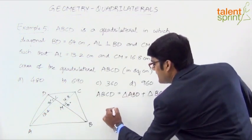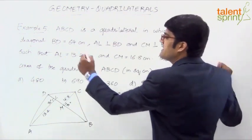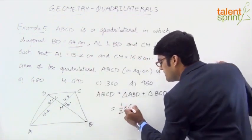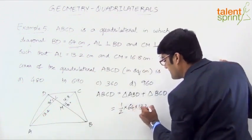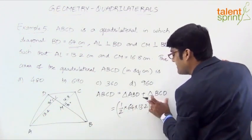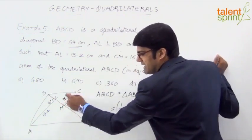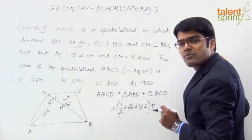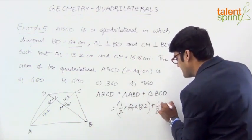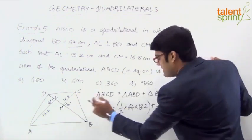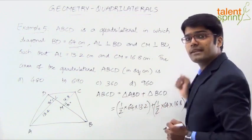So for triangle ABD we can say the area is half into the base is BD. What is the length of BD? 64. It is given here. So 64 into the height is this perpendicular which is 13.2. Similarly area of the triangle BCD. This is the base BD again. Height is 16.8. Perpendicular from the top vertex there. So half into base into height. So this is half into base is 64 and the height is 16.8. That's it.